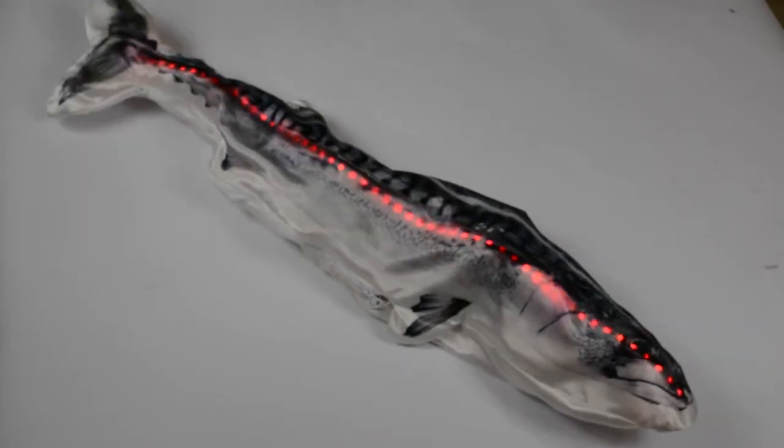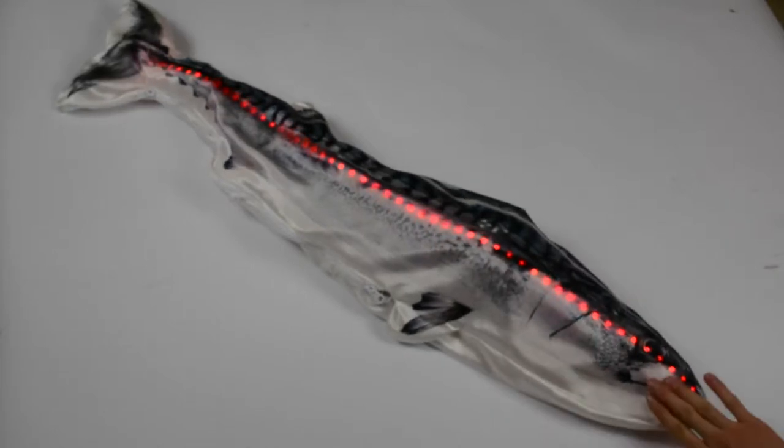Here, the fish is angry. When it is angry, the lights turn red and the fish moves away from touch in jerking motions.